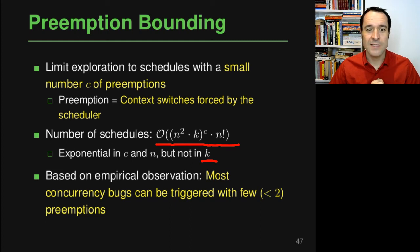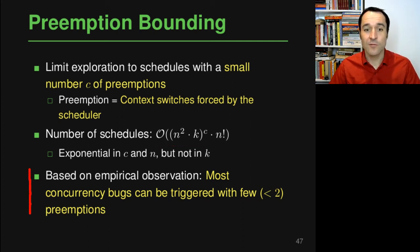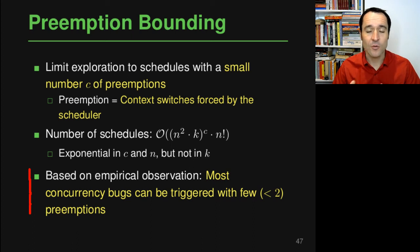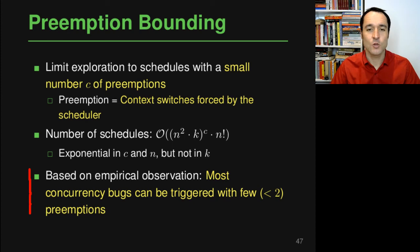This idea of preemption bounding is based on the empirical observation that most concurrency-related bugs can actually be triggered with few — typically less than two — preemptions. So you don't have to go back and forth between threads very often; you just have to switch at the right points in time to trigger most concurrency bugs. Of course, this is a heuristic, so it's possible to miss some concurrency bugs if the limit c is too small.